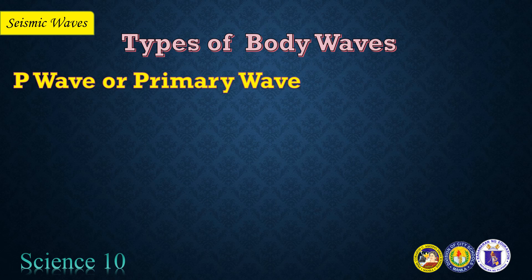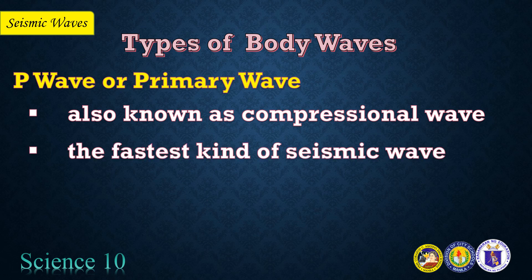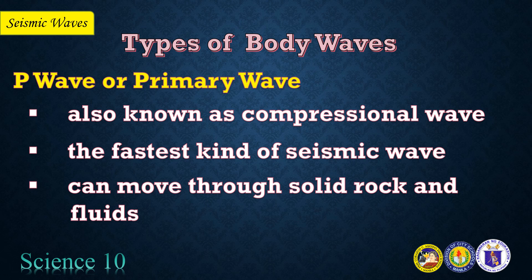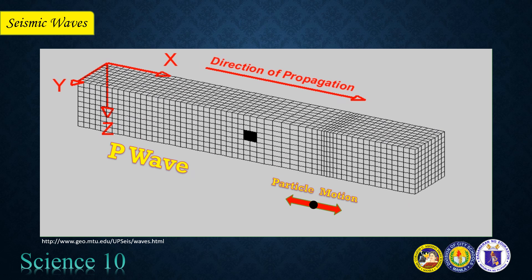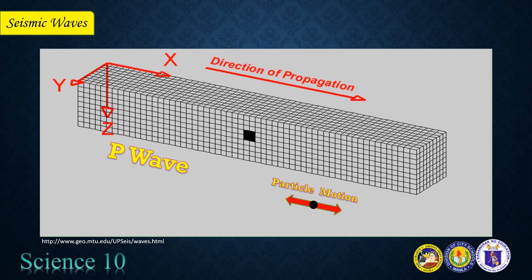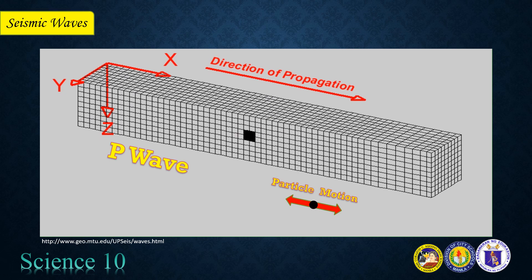P wave, or primary wave, is also known as compressional wave. It is the fastest kind of seismic wave, and it can move through solid rock and fluids. Here is a P wave in action. Subjected to a P wave, particles move in the same direction that the wave is moving in, which is the direction that energy is traveling in, and is sometimes called the direction of wave propagation.